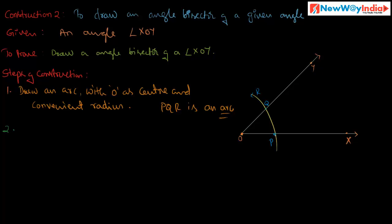Now the second step: with P as the center, take a radius slightly more than half of PQ and construct an arc in the interior of the angle. Similarly, with Q as the center and the same radius — slightly more than half of PQ — construct another arc in the interior. These two arcs meet at a point, let it be Z.